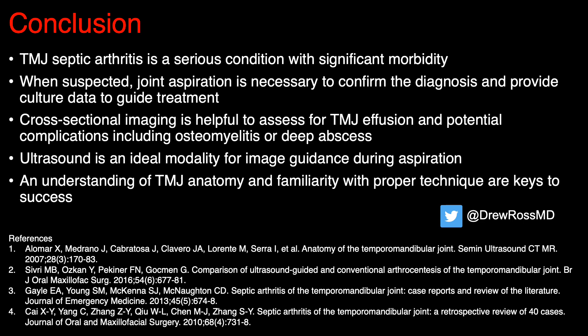In conclusion, TMJ septic arthritis, although rare, is a serious condition requiring prompt treatment to minimize ongoing morbidity, specifically the development of secondary osteoarthritis. When the diagnosis is suspected, joint aspiration is critical to confirm the diagnosis and provide accurate culture data to guide antibiotic treatment. Cross-sectional imaging also plays a role, often obtained before aspiration to assess for a temporomandibular joint effusion, potential complications such as deep abscess formation and osteomyelitis, and other causes of symptoms. Ultrasound is an ideal imaging modality for guidance during aspiration, and the technique is fairly straightforward given good understanding of TMJ anatomy and familiarity with ultrasound-guided aspiration technique.